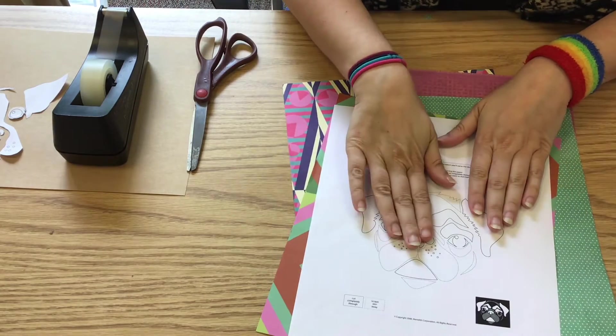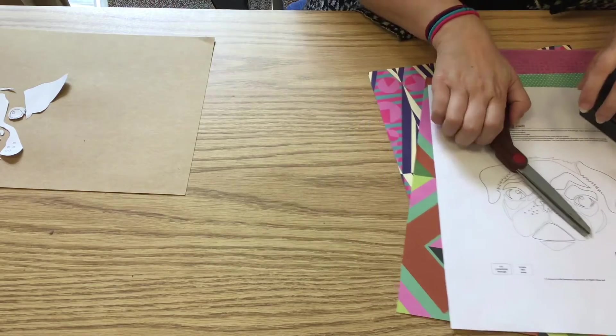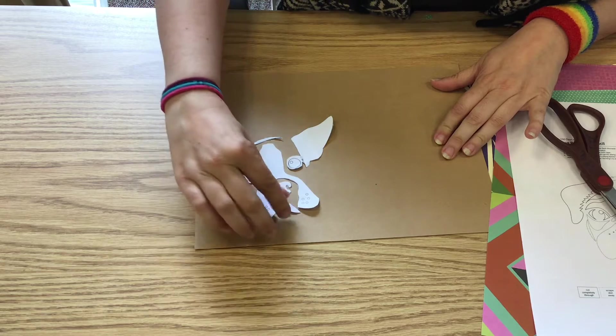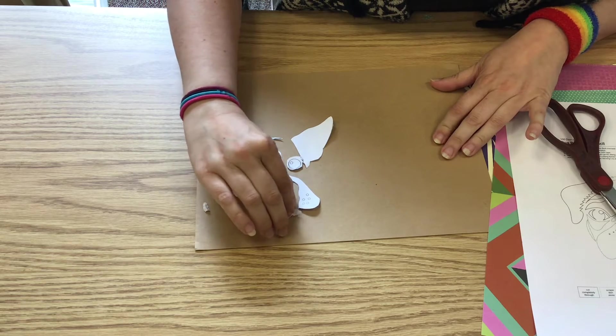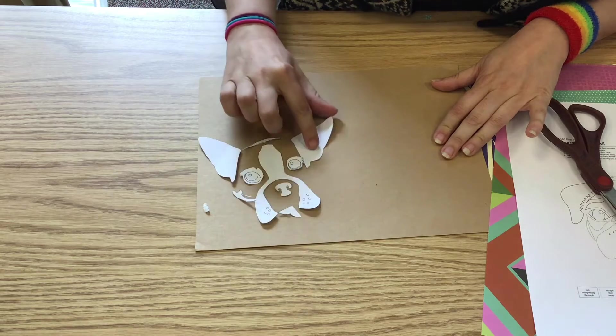So once you've cut all the pieces out, what you're going to do is take your brown paper and just lay out all your cutouts and figure out where and how you would like your finished face to look.